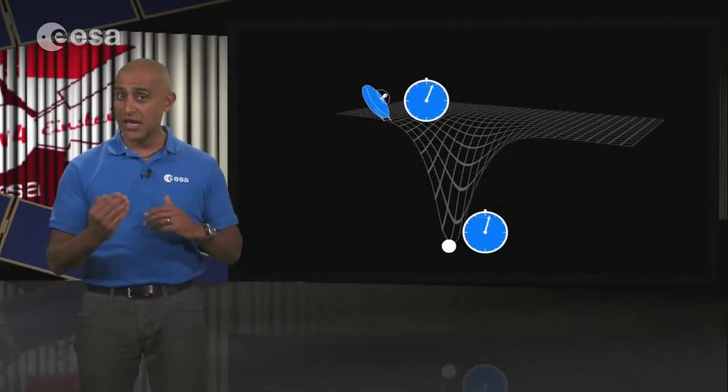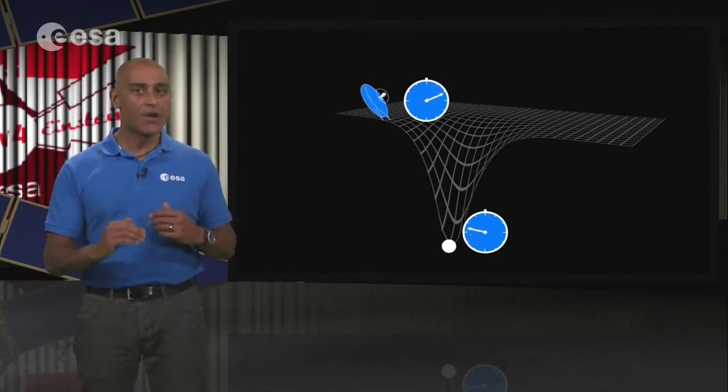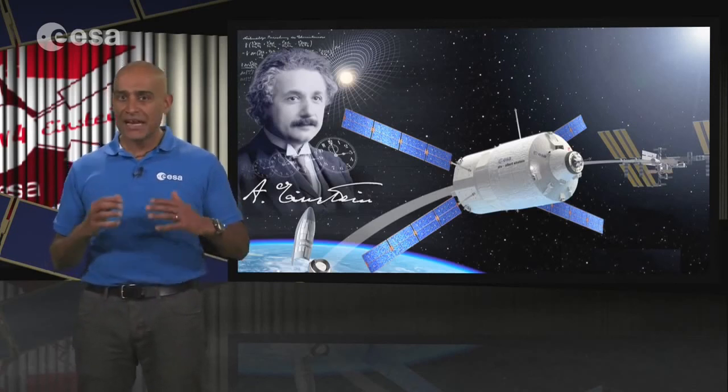Clocks, and therefore time, run slower the deeper you are in a gravity field. An effect predicted by Einstein in 1916, and finally confirmed experimentally in 1959 by Robert Pound and Glenn Rebker, who successfully measured this effect over a vertical height difference of 23 meters at Harvard University.